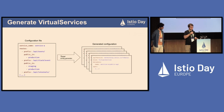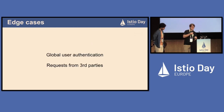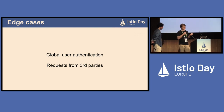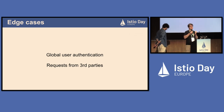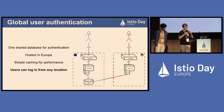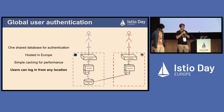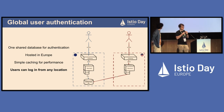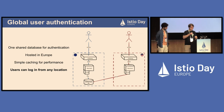There are a few edge cases to address. The first is global user authentication. Since an authenticated user can log in from anywhere, we need to find their location from anywhere too. Our solution: we share the authentication database, hosted in Europe, with simple caching at the application layer for performance. Users can log in from any location, and company data still stays on separate infrastructure. The authentication database is the only piece of data shared across locations.